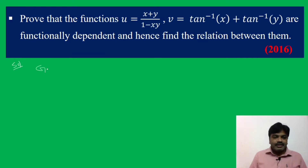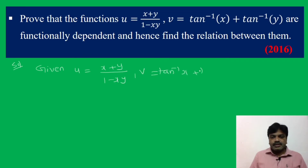Given: u = (x + y)/(1 − xy) and v = tan⁻¹x + tan⁻¹y.